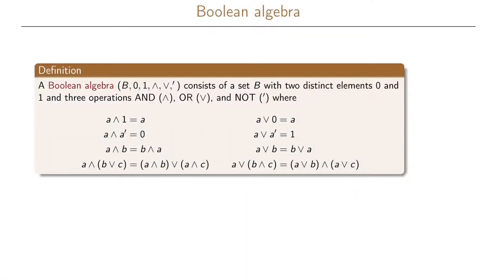We will now define a Boolean algebra and then see the link between a Boolean algebra and a Boolean ring. So let's start with the definition of a Boolean algebra. A Boolean algebra is a set B which includes the two distinct elements 0 and 1, and it also includes three operations: AND, OR, and NOT.